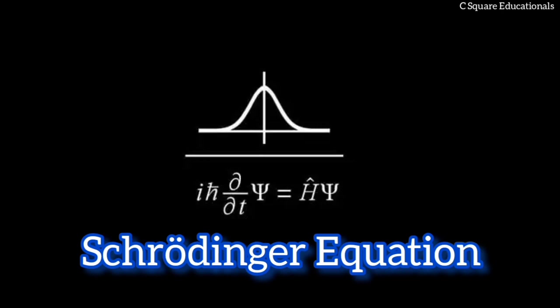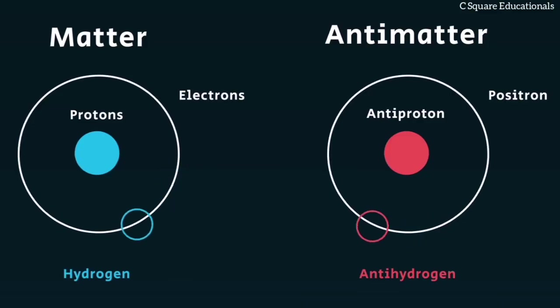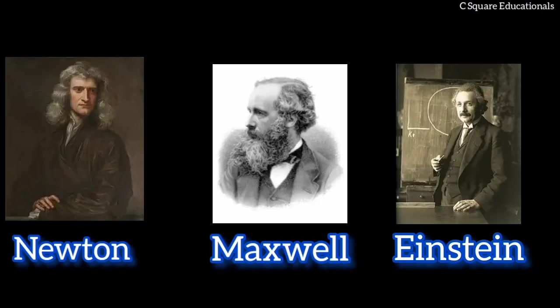However, in the limit of zero mass, the Dirac equation reduces to the Weyl equation. Although Dirac did not at first fully appreciate the importance of his results, the entire explanation of spin as a consequence of the union of quantum mechanics and relativity, and the eventual discovery of the positron, represents one of the great triumphs of theoretical physics. This accomplishment has been described as fully on par with the works of Newton, Maxwell, and Einstein before him.